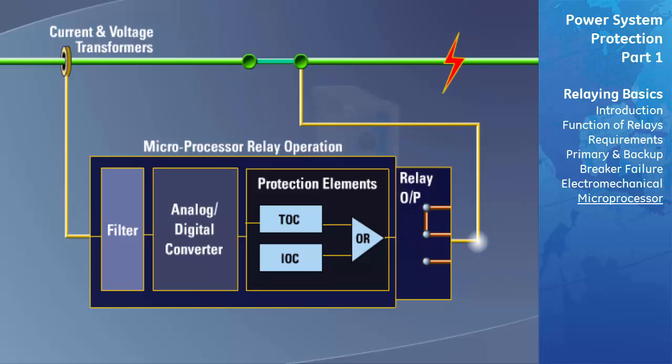These elements may work independent or through the use of logic gates. The type and number of protective elements within a particular relay will depend upon the type of protection application the relay has been designed for. For example, a relay designed to protect a transformer will have some protective elements not found in a relay designed to protect a feeder, and vice versa.